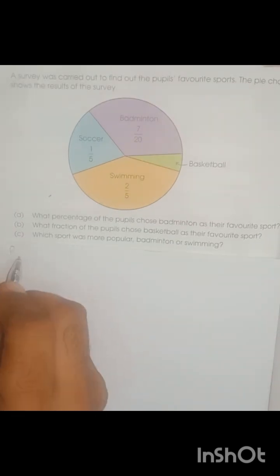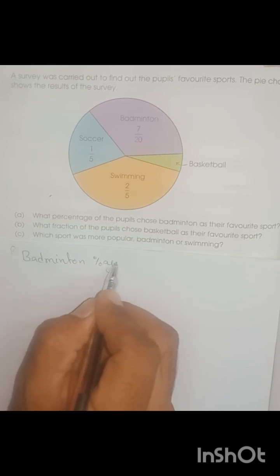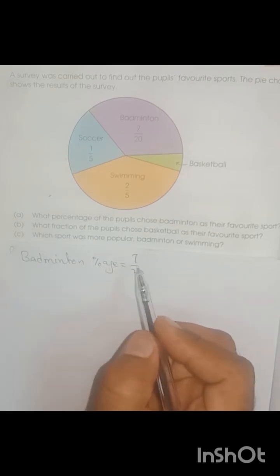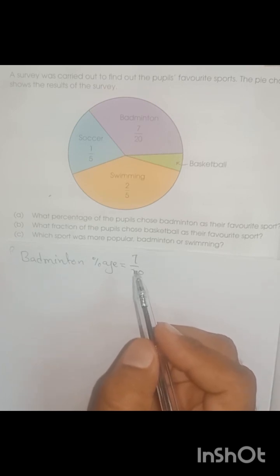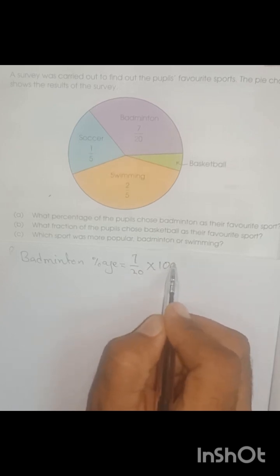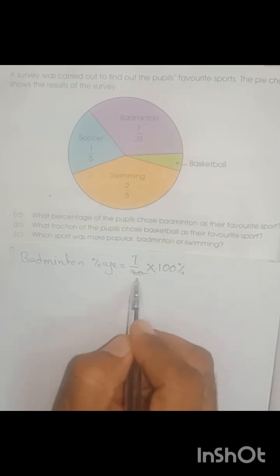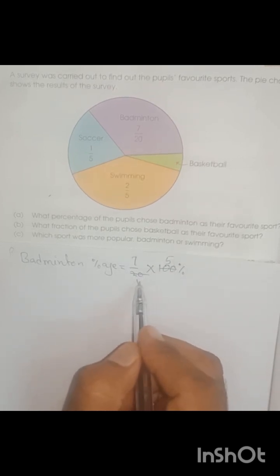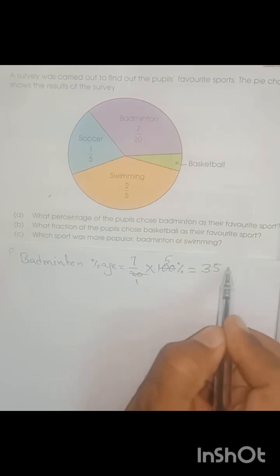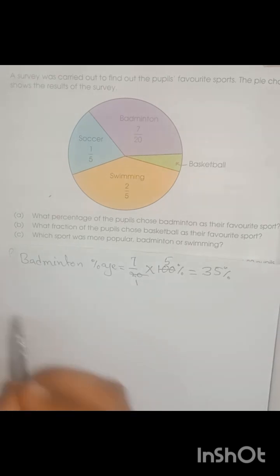Badminton percentage equals 7 over 20. To convert any fraction to percentage, we multiply by 100%. So 7 over 20 multiplied by 100%. We can simplify: 20 goes into 100 five times, leaving 7 multiplied by 5, which equals 35. That means 35% of pupils chose badminton as their favorite sport. Part A is solved.